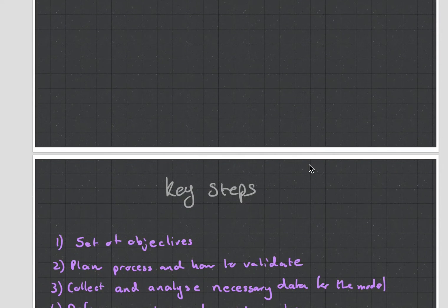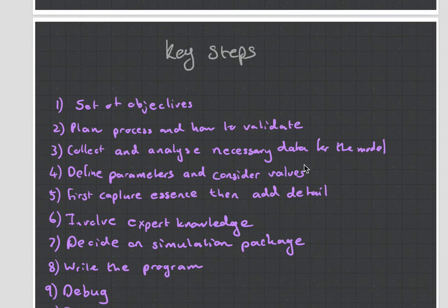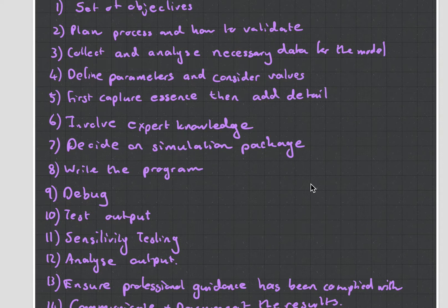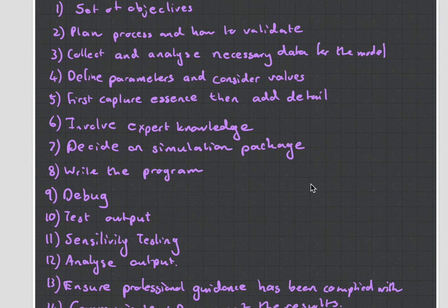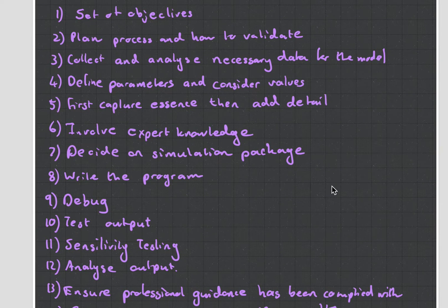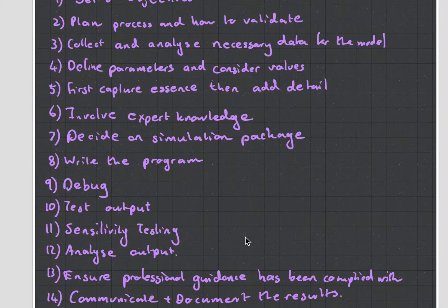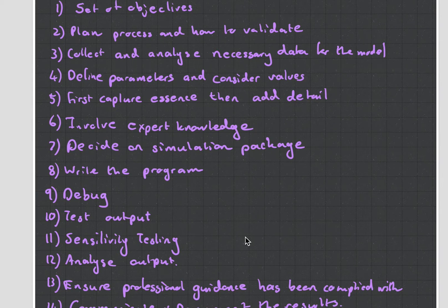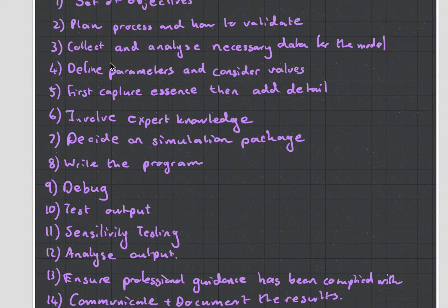The chapter starts with the key steps of setting up a model, and there's 14 different steps. There have been exam questions that asked you to recall these 14 steps and apply them to a specific scenario, which is quite challenging. But you must learn this because it's a core principle of actuarial science. Learn it as 14 things you're going to be using when you start working one day.